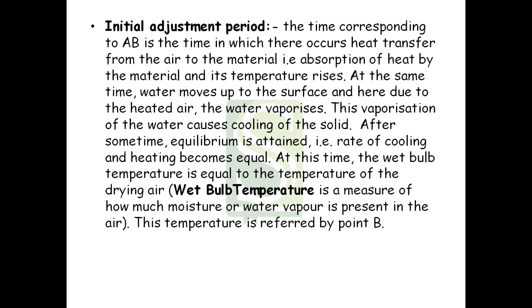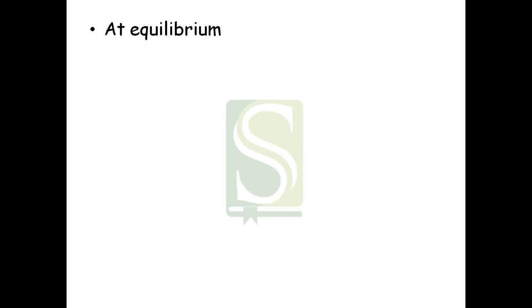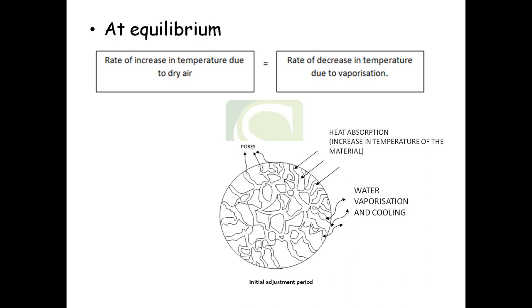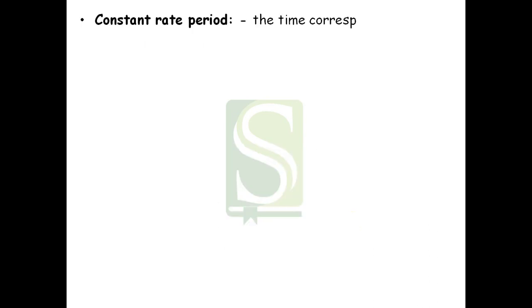During the initial adjustment period, as heat is supplied the material surface temperature increases, causing water in the voids to migrate toward the surface. This water vaporizes at the surface, causing cooling of the solid because latent heat of vaporization is utilized. After some time, equilibrium is attained — the rate of cooling and heating become equal. At this point the wet bulb temperature equals the temperature of the drying air. Wet bulb temperature is a measure of how much moisture or water vapor is present in the air, and this is represented by point B.